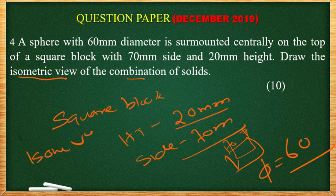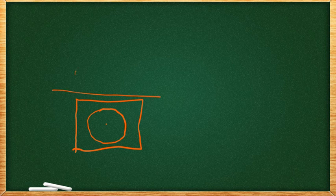In the isometric view we have a square box, and on top we have a circle representing the sphere. Inside the square we have the sphere with diameter 60 mm. We are drawing a circle with radius 30 mm. The top view shows the complete circle, and the front view also shows the circle with 30 mm radius and 20 mm height.